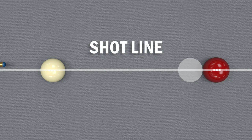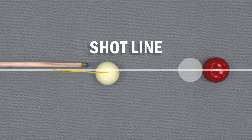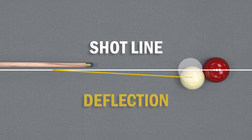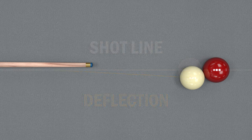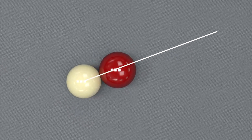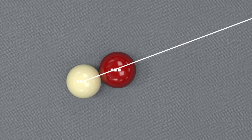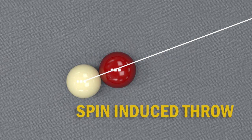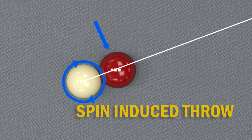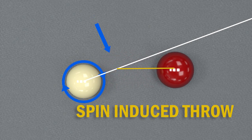When we play with sidespin there are two things that happen to the balls. The first is deflection, which is when the cue ball is pushed off the shot line by contacting the side of the ball. The second thing is spin-induced throw on the object ball — because the cue ball is spinning when it contacts the object ball, that spin throws the object ball to the side just a little.